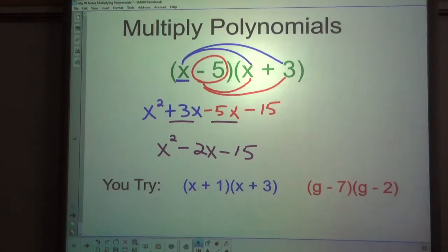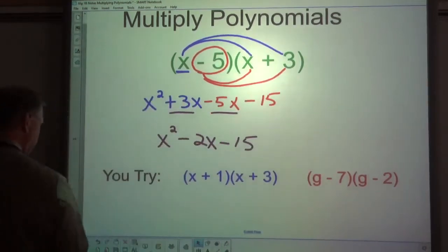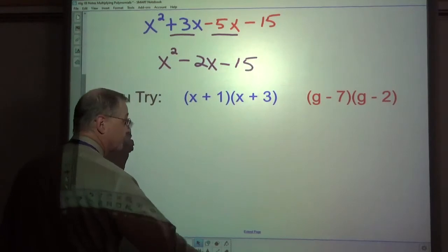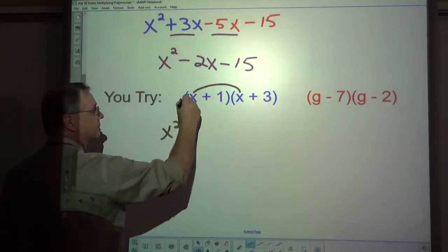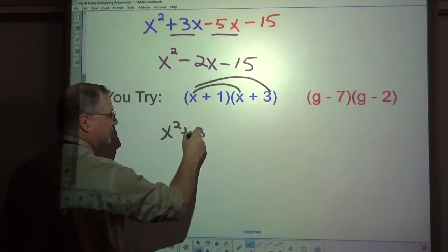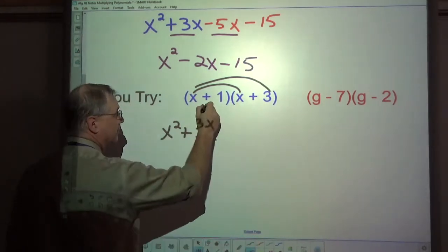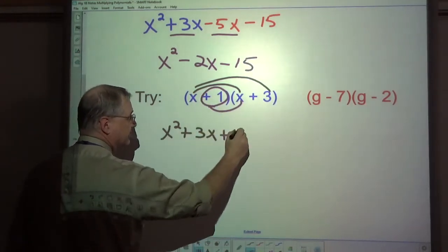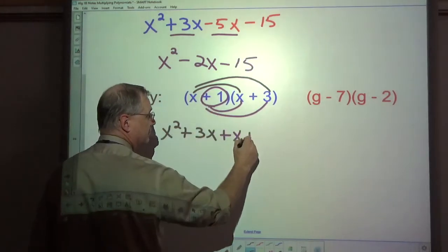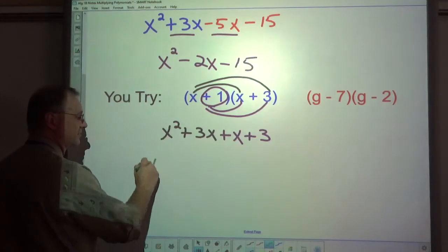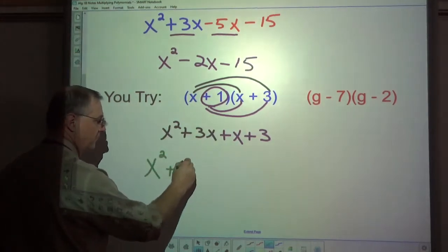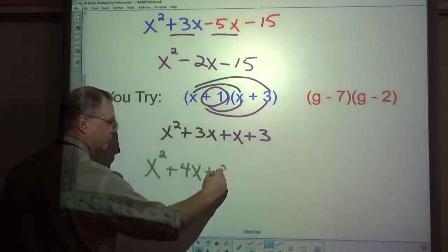And I will do that right now, now that you've unpaused the video. So I'm going to distribute x squared plus 3x plus x plus 3. And I combine my like terms, x squared plus 4x plus 3.